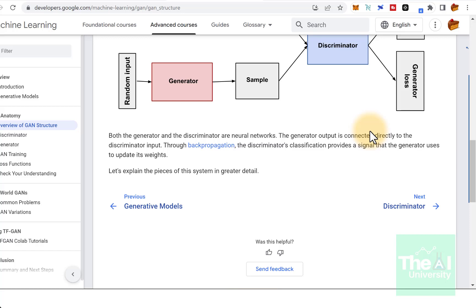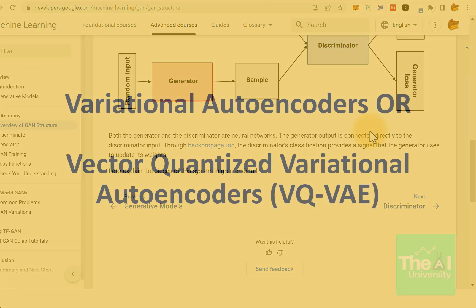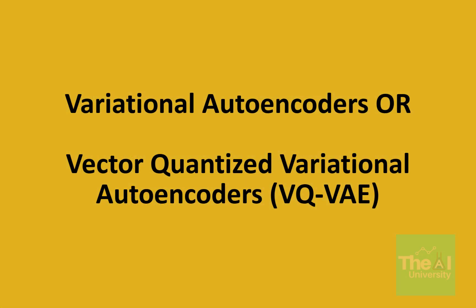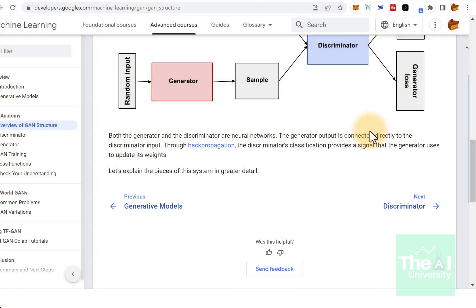Another way to create synthetic images is with variational autoencoders, and more recently vector quantized variational autoencoders, which we call VQVAE. VQVAE creates discrete latent representations and generates more variety of images, and is easier to train compared to GANs.